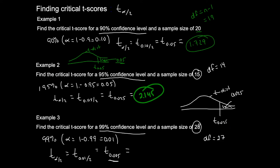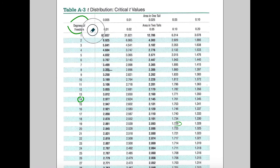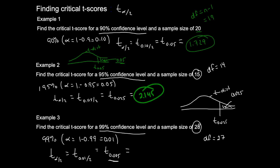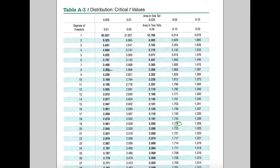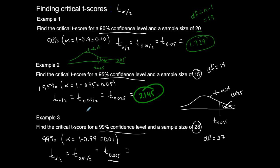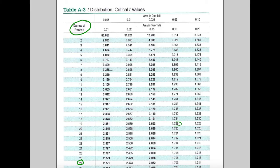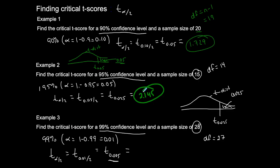Going to the table, degrees of freedom are 27, and the area in one tail is 0.005. Lining those up, I get 2.771. My critical t-score for this case is 2.771.